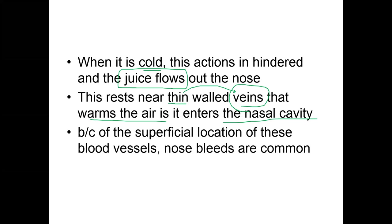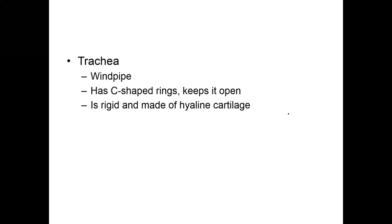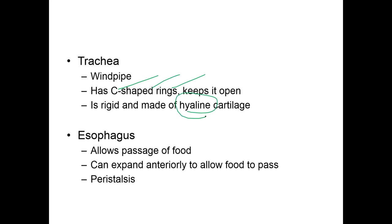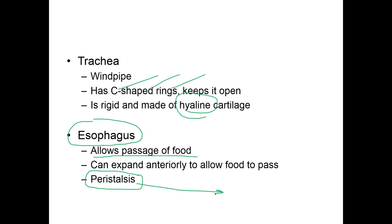The trachea is the windpipe. It's held open by C-shaped cartilaginous rings made of hyaline cartilage. Behind the trachea is the esophagus — the tube that allows food to enter the stomach. What allows food to travel down the tube is a peristaltic wave, which is smooth muscle contraction moving food from point A to point B into the stomach.